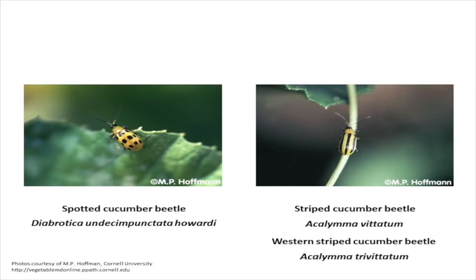There are two types of cucumber beetle, both of which are agricultural pests: spotted cucumber beetles and striped cucumber beetles. Spotted cucumber beetles, found across the United States, are a more general herbivore and tend to be not as problematic on cucurbit crops as striped cucumber beetles. Striped cucumber beetles are found east of the Rocky Mountain Range, and western striped cucumber beetles are found west of the Rockies. Knowing which beetles you find on your farm will help you to manage your cucurbit crops.